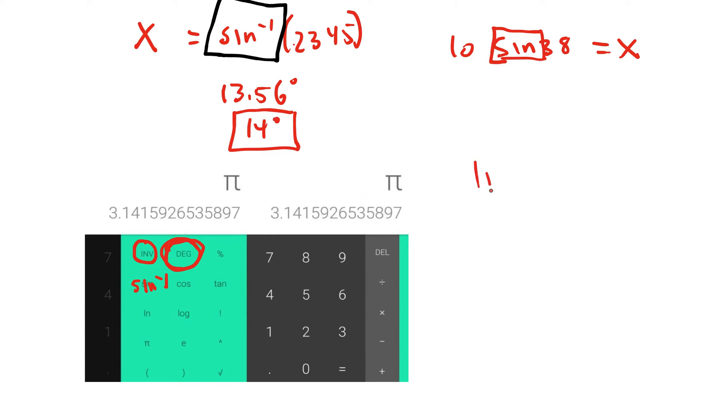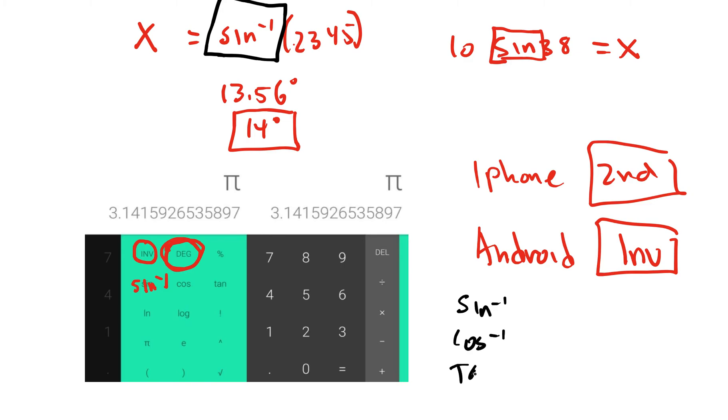So in the iPhone, you're going to see the button will say second. On the Android, the button says inverse. Those are what help get us the options of sine to the negative 1, cosine to the negative 1, tangent to the negative 1.